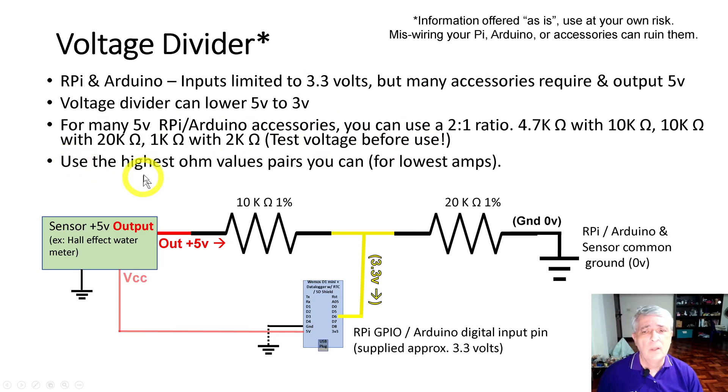As another rule of thumb, you want to use the highest ohm values for these. So if a 10kΩ and 20kΩ resistor pair will work for you, use that instead of going with a 1kΩ or 2kΩ pair. That may work but your power draw is going to be a lot higher.